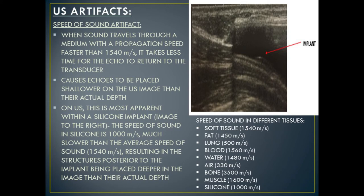As you can see, there's a lot of variation in the speed of sound through different tissues in the body, resulting in multiple opportunities for velocity error artifacts.